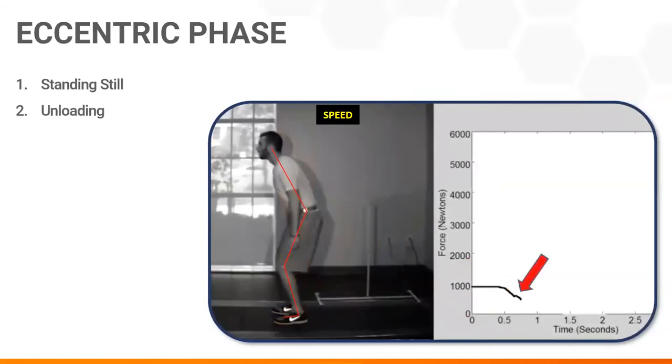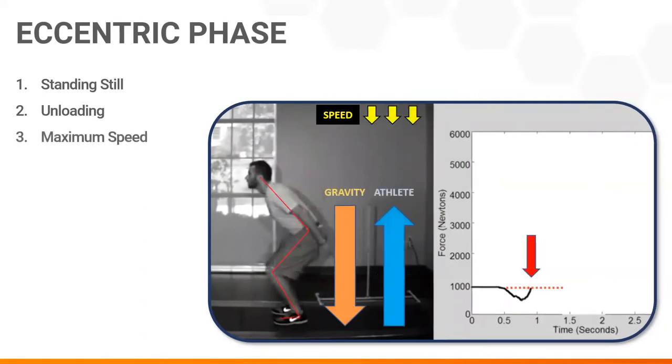Doing so changes the force balance like a seesaw. Since gravity is now larger, he accelerates downward. He will continue to accelerate downward until he passes this point of maximum eccentric velocity.